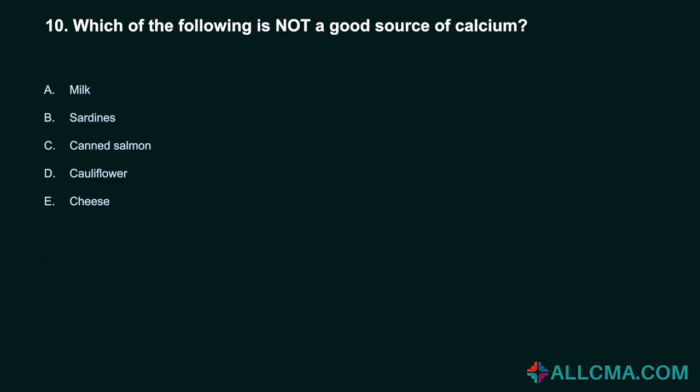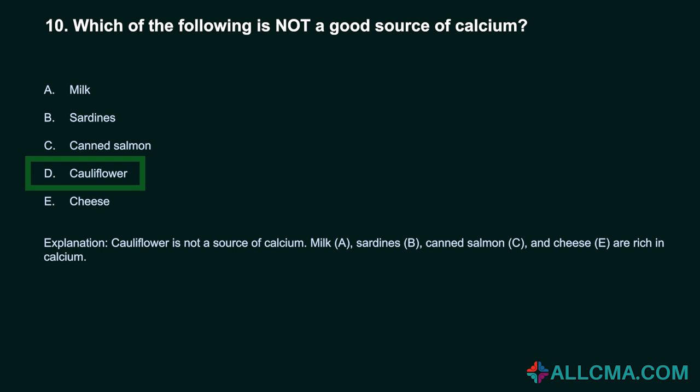Question 10: Which of the following is not a good source of calcium? A. Milk. B. Sardines. C. Canned salmon. D. Cauliflower. E. Cheese. Correct answer: D. Cauliflower. Cauliflower is not a source of calcium. Milk, sardines, canned salmon, and cheese are rich in calcium.